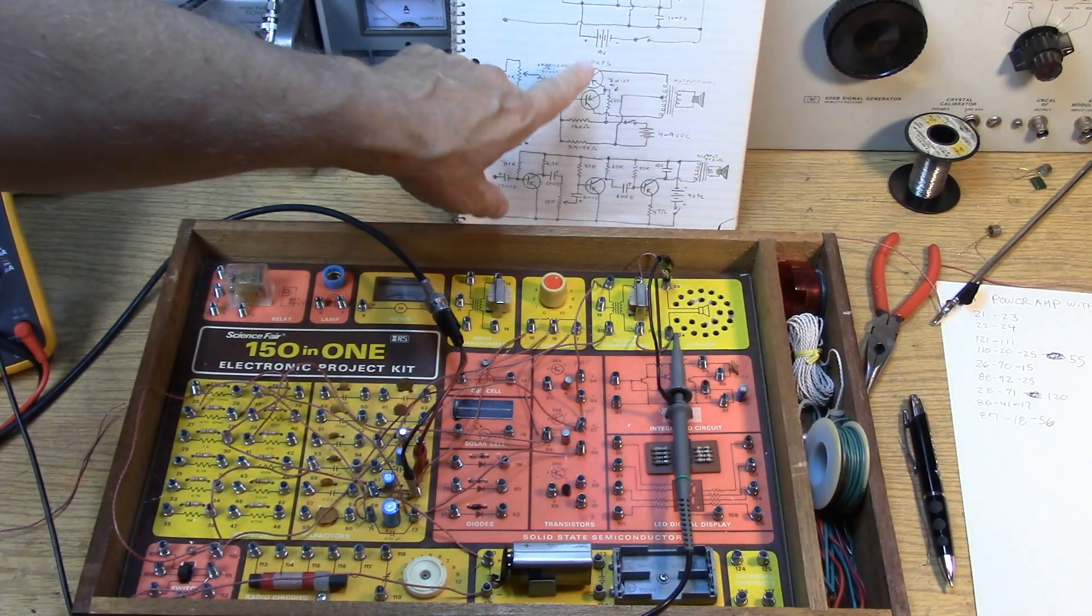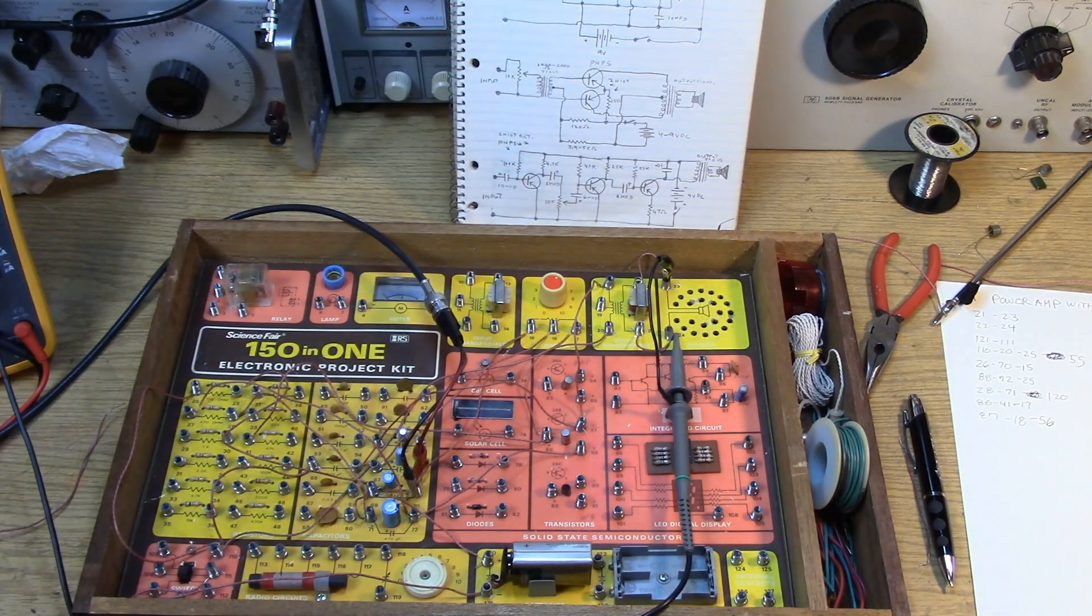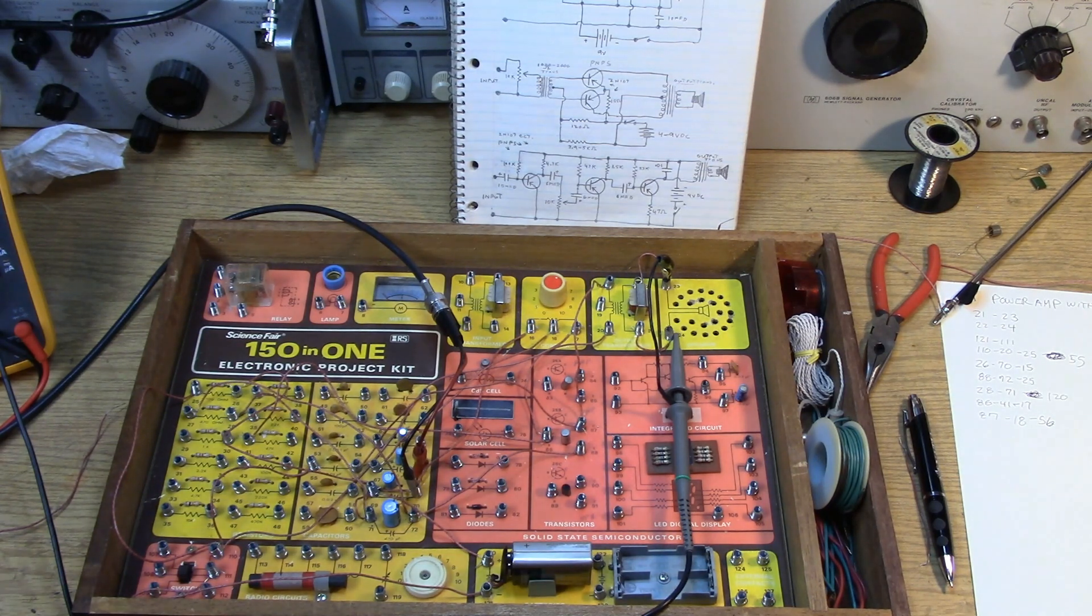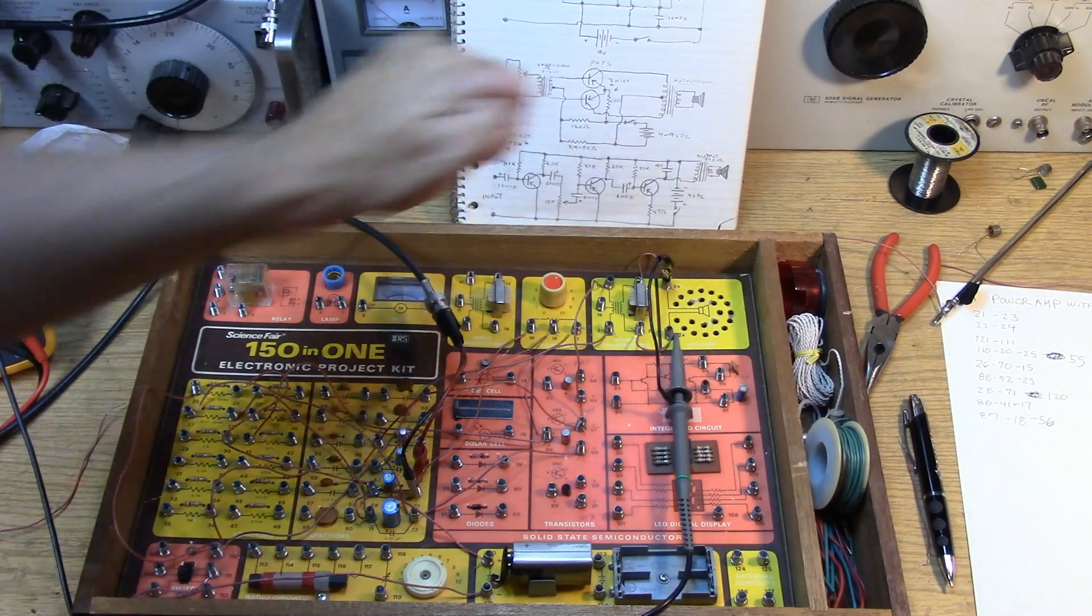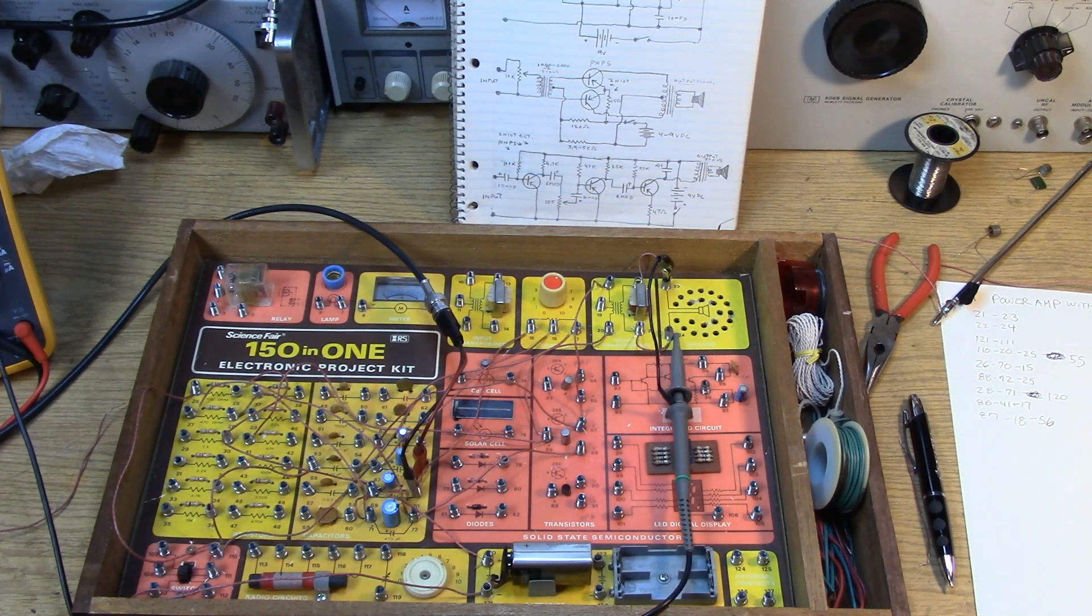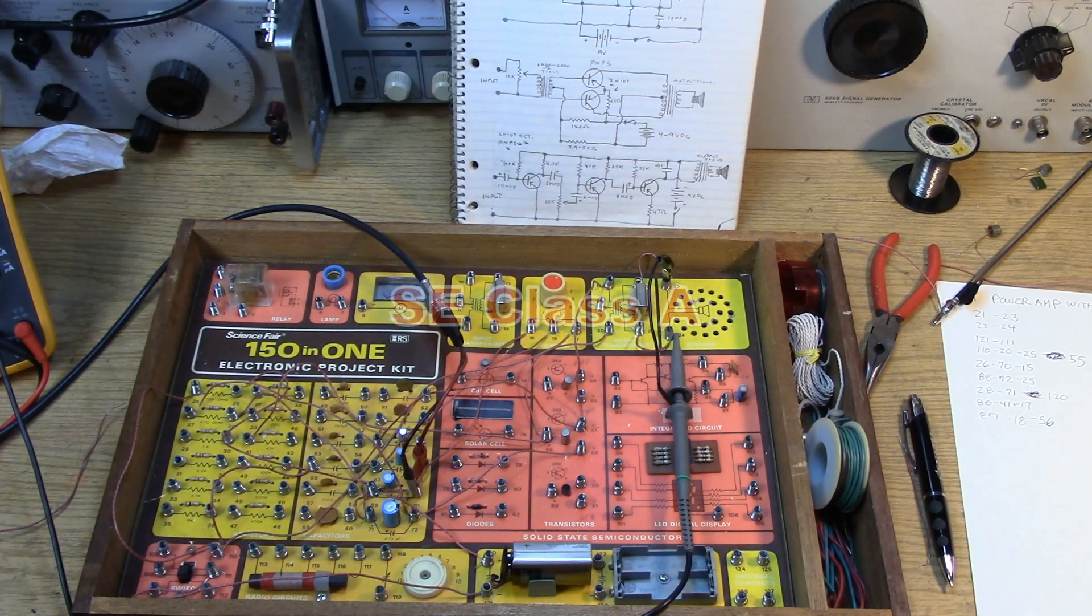One is the classic push-pull amplifier. This is found in most of the pocket radios of the 1960s through early 80s. And the other is the class A type power amplifier that basically drives a speaker with a single transistor, single-ended class A it's called.